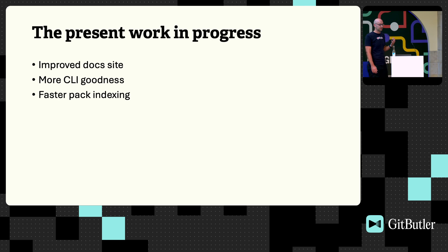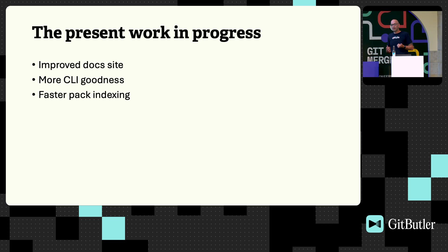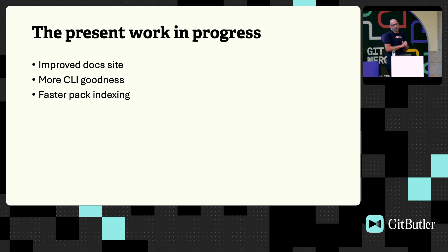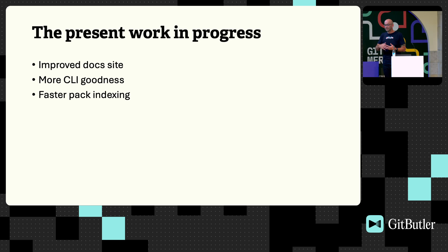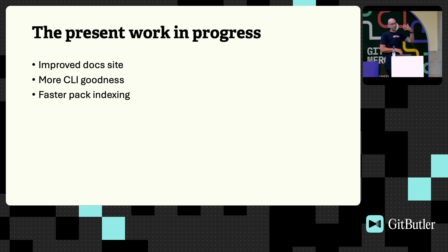What's the work in progress presently in libgit2? I've got about three branches on my local machine that I push forward a little bit. One is an improved doc site. The next one is more CLI goodness — I'll talk about that. And the third is just performance improvements. Libgit2 in certain areas is not as fast as Git. It needs to be. It's relatively simple engineering work — sit down, tease apart some perf gains, measure it, improve it, repeat until you're fast.